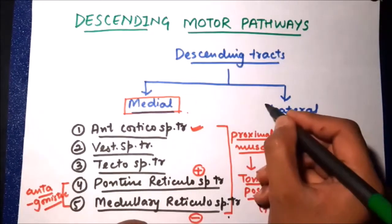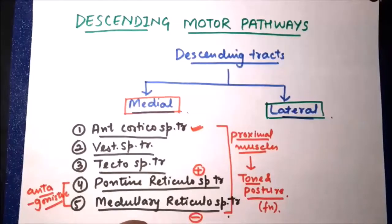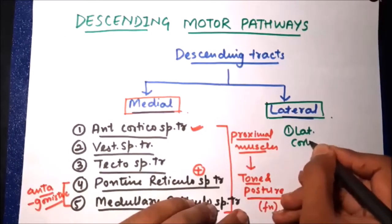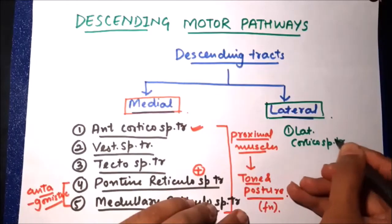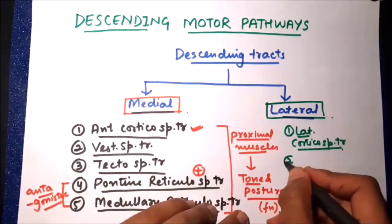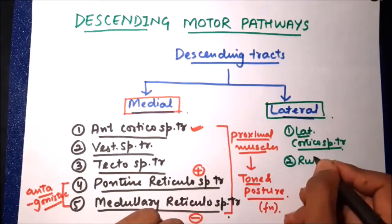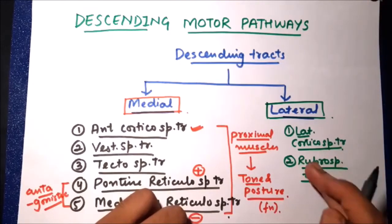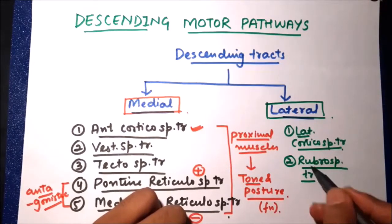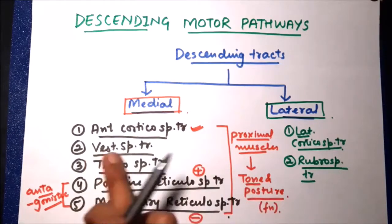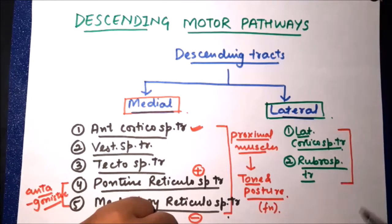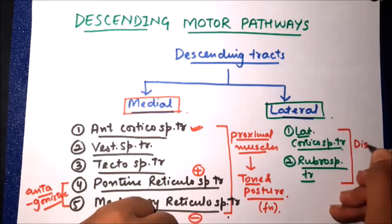In the lateral descending tracts we have two important tracts. The first is the lateral corticospinal tract — both the anterior and lateral corticospinal tracts originate from the cortex and divide at the level of the medulla. The second is the rubrospinal tract, which starts from the red nucleus of the midbrain to the spinal cord.